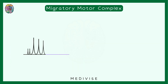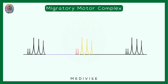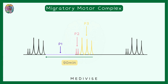Looking at a graphical format with contractile activity on the Y axis against time — phase 1 shows almost no activity, phase 2 shows small irregular contractions, and phase 3 shows strong contractions that help in clearing the GIT. Very importantly, this cycle of phases 1, 2, and 3 repeats every 90 to 120 minutes. If you have to remember one number, remember 90 minutes.